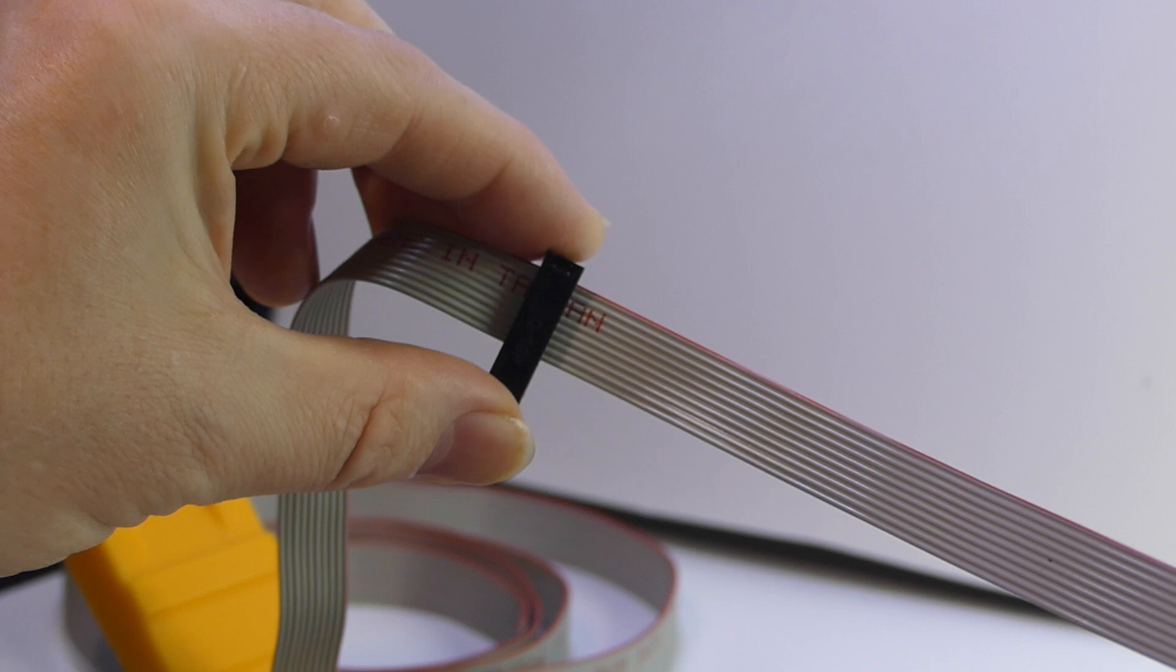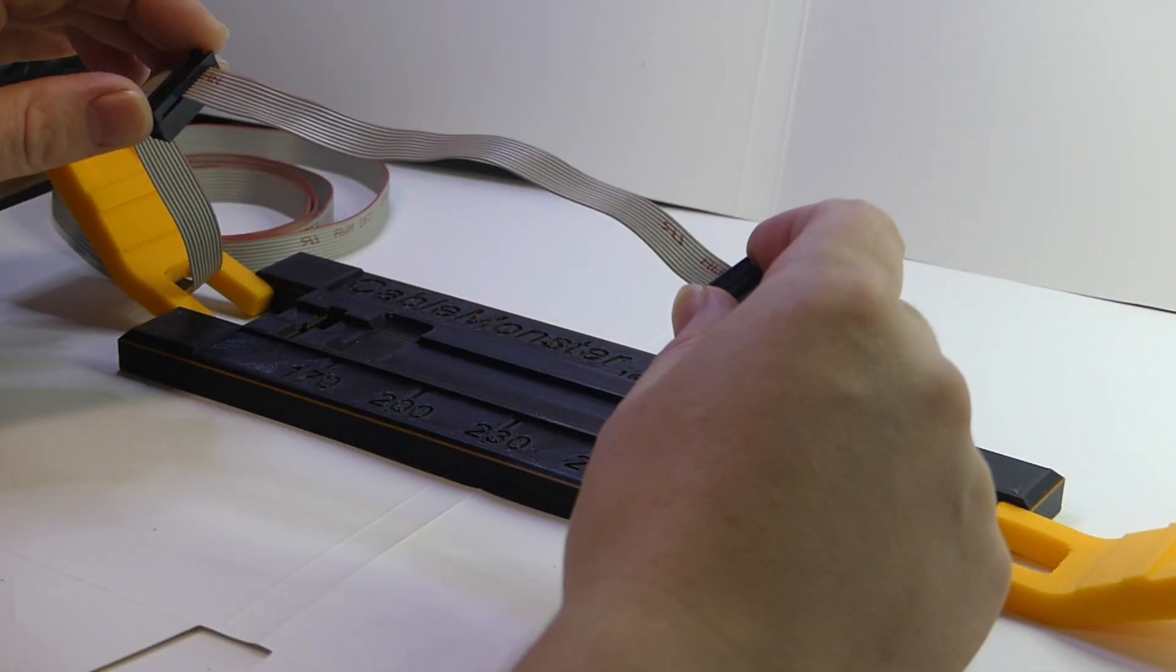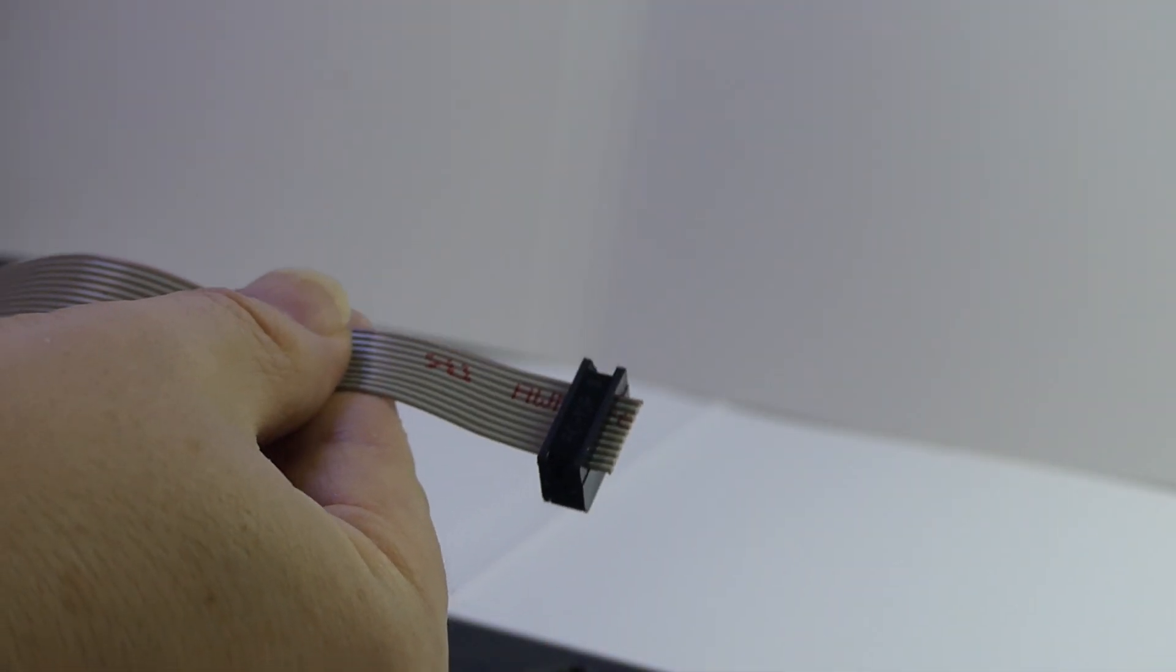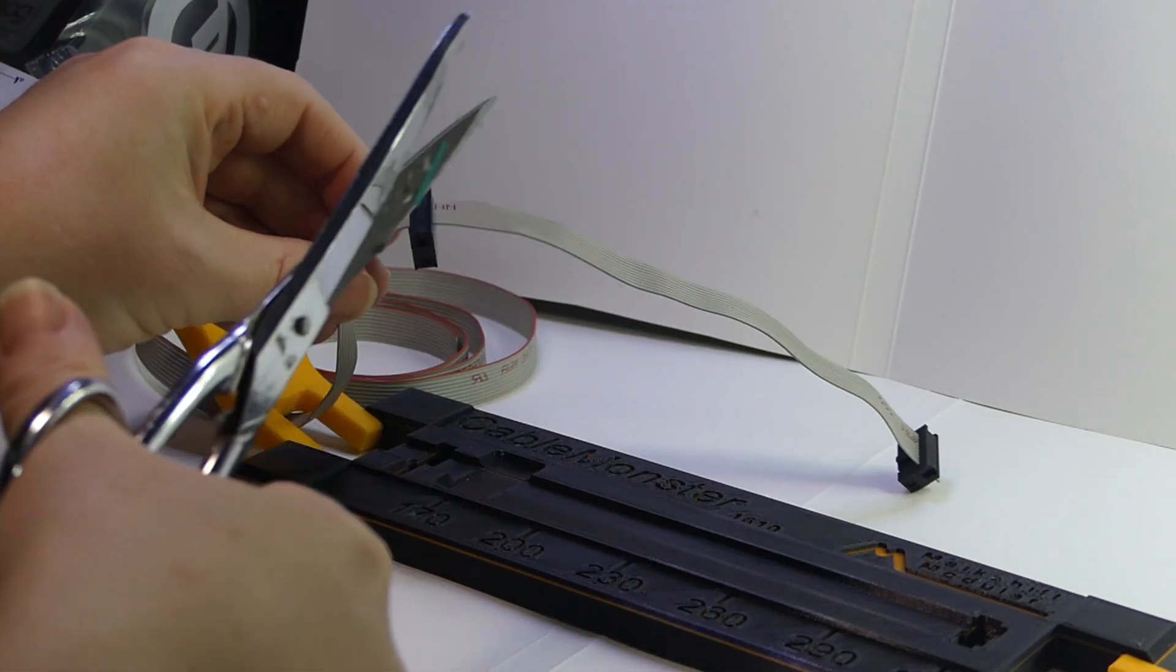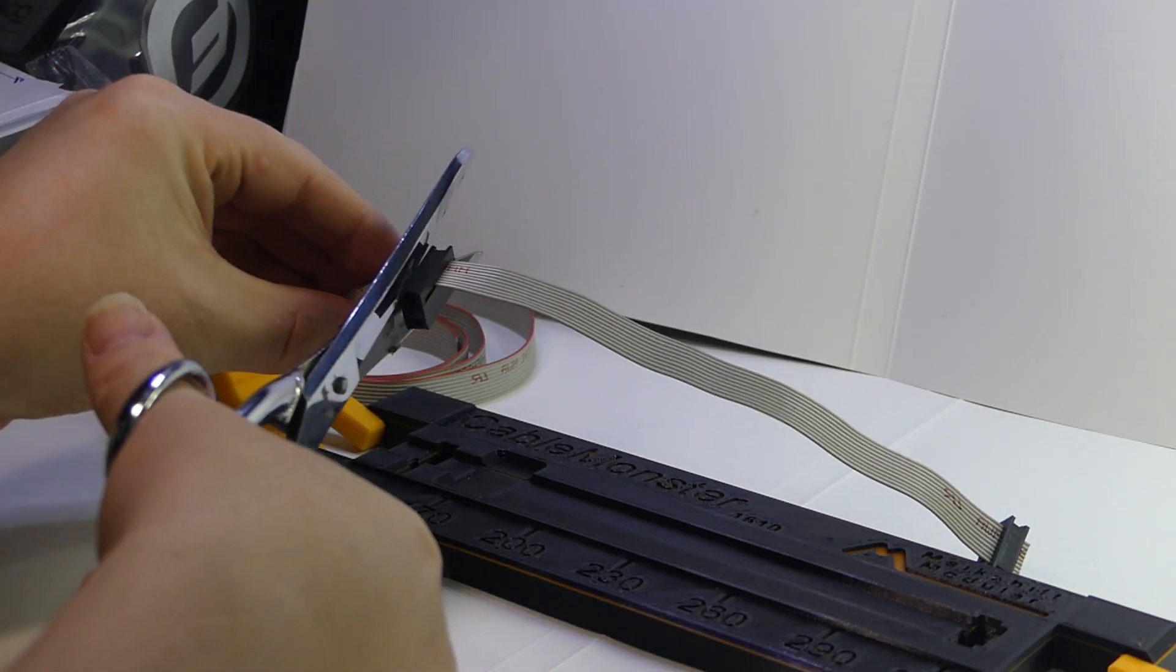If it doesn't fully snap in the first time, just reinsert the connector and try again with a bit more force. With a regular pair of scissors, cut the excess ribbon cable.